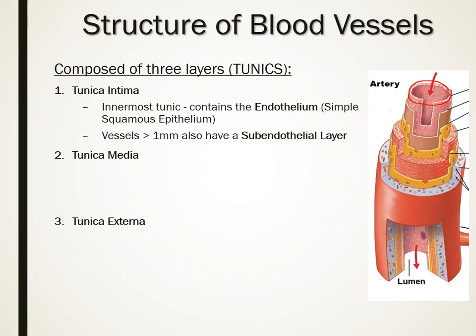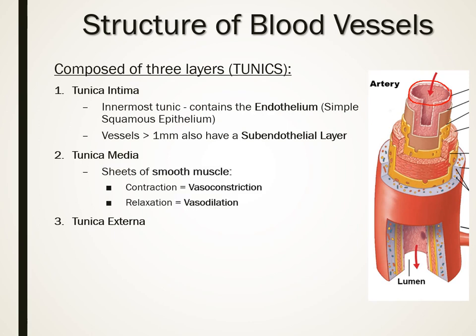The middle layer is called the tunica media, which consists of a few layers of smooth muscle. Blood vessels do have muscle because in certain vessels we can dilate or constrict them. This is how vasoconstriction and vasodilation work — for example, for thermoregulation, we use these smooth muscles to constrict or dilate vessels to control blood flow to different areas of the body.